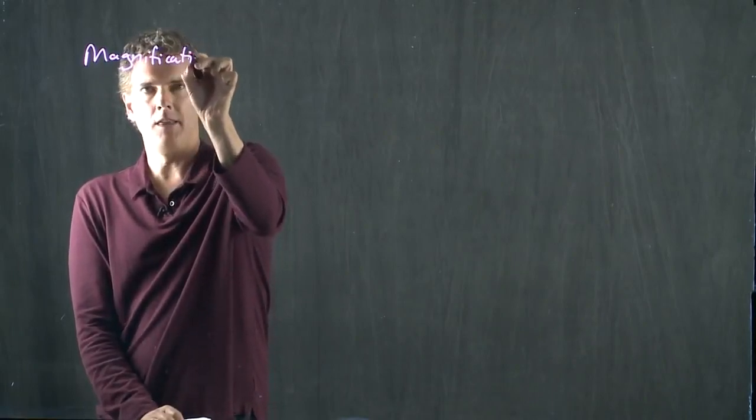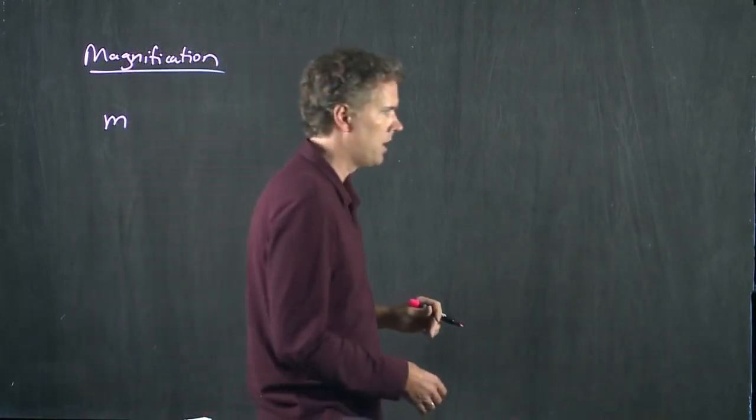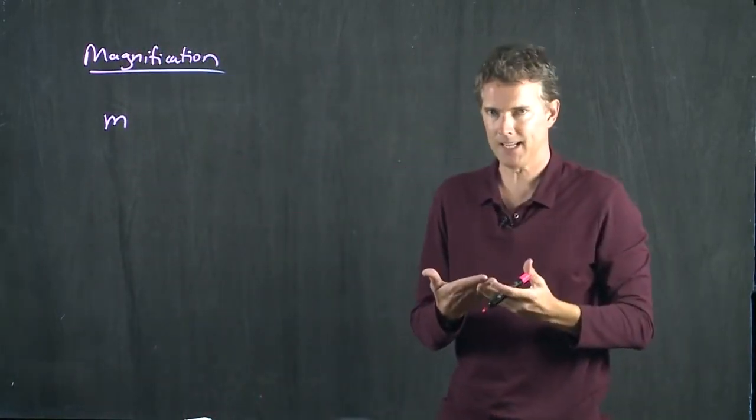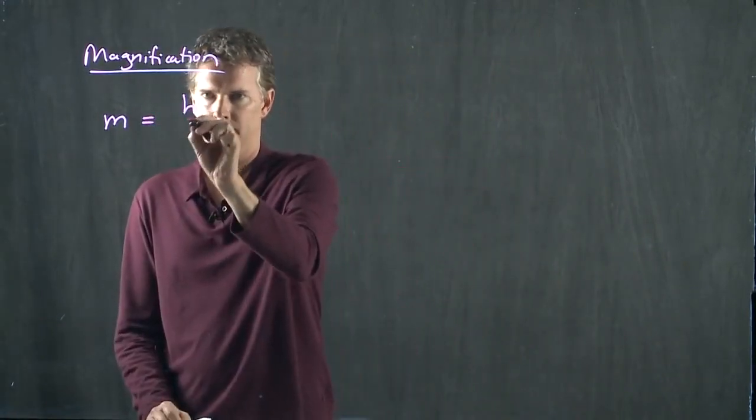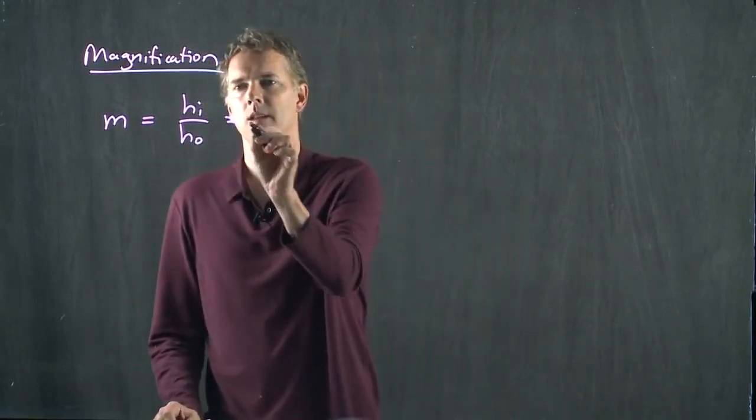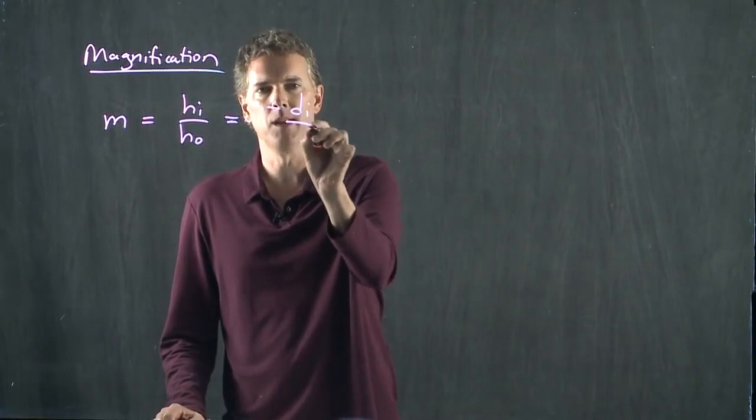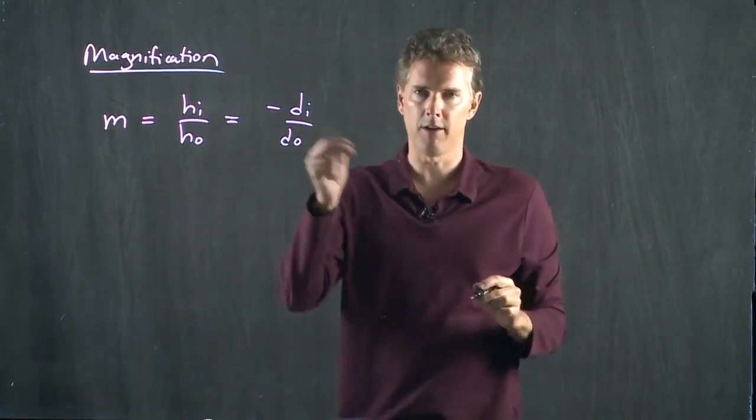We can quantify the magnification. The magnification M is just related to the height of the image over the height of the object, and that is directly related to how far away the image is versus how far away the object is.